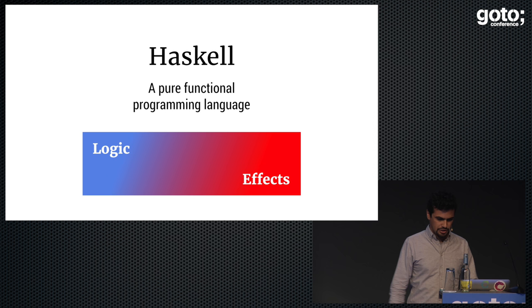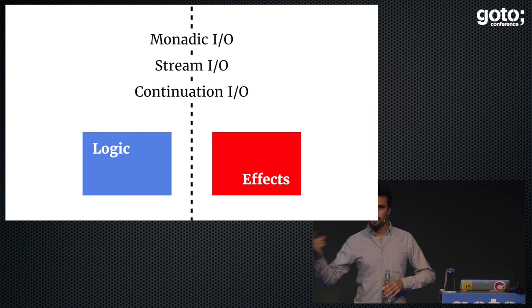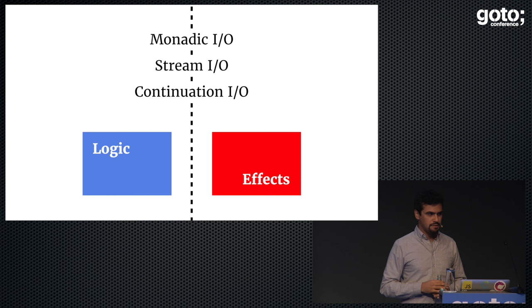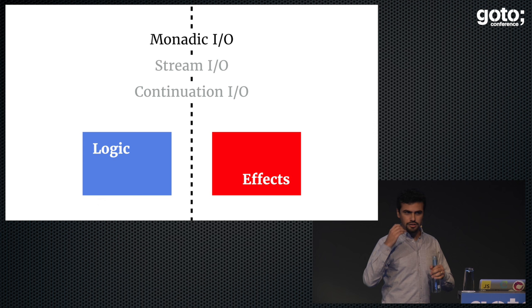There are different ways to separate logic from effects. One way is so-called Monadic IO, another way is called Stream IO, and another is called Continuation IO — all from the 1989 paper. It turns out that of these three, only Monadic IO survived in Haskell. We're going to quickly see Monadic IO and Stream IO, but not Continuation IO — it's kind of out of scope.